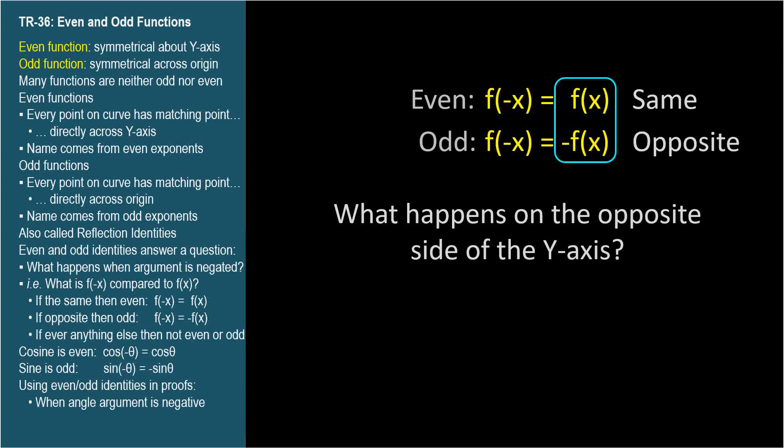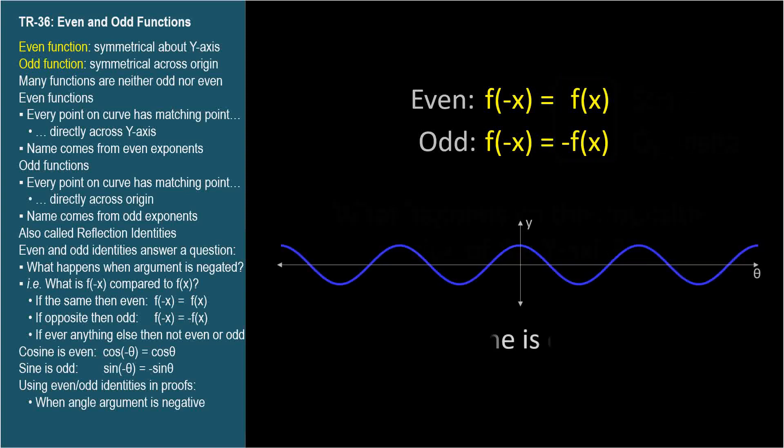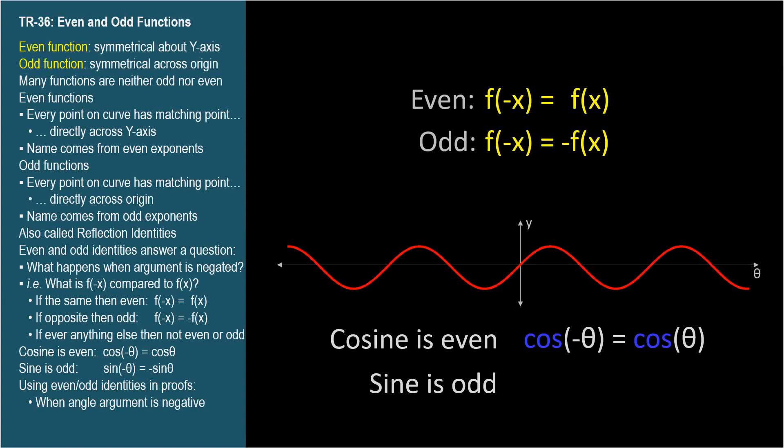So why are we talking about this in trigonometry? Because cosine is an even function, and sine is an odd function.